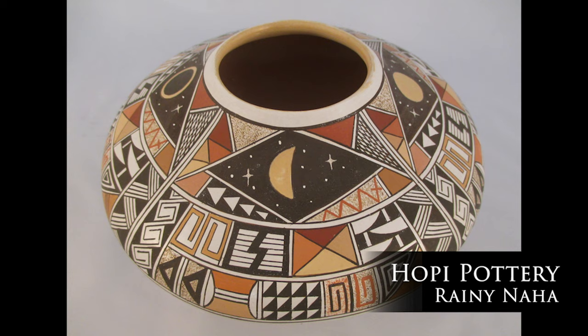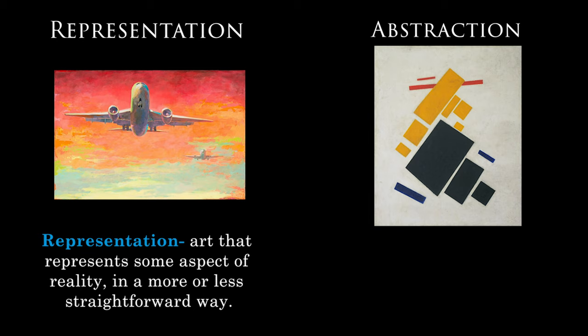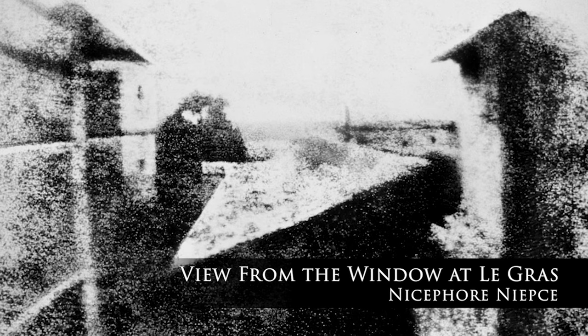There are many examples in historical and non-Western art of people using abstraction to successfully communicate ideas. But in the context of today's lesson, we are going to be looking at some of the more notorious uses of abstraction in Western culture and examining why things got to be that way in the first place. In art, you can basically have representation and you can have abstraction. Here are examples of each from different periods within the modern era. Representation duplicates what you find in the natural world — it seeks to copy reality. Abstraction, on the other hand, is either an adherence to geometrical shapes and forms as a stand-in for organic or representational objects, or a record of artistic gestures not intended to copy anything found in nature. And this all begins with this image right here — the first ever photograph taken by a human.